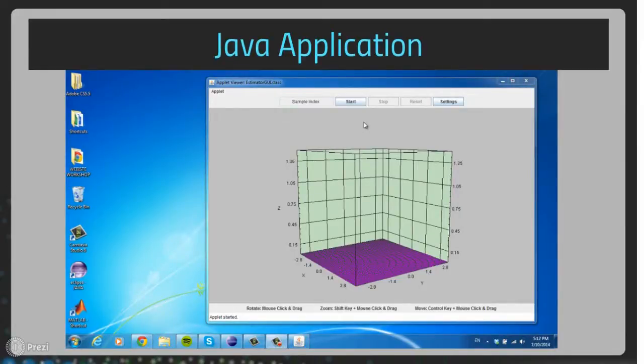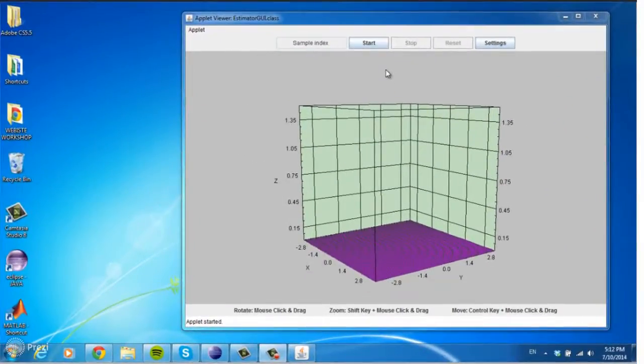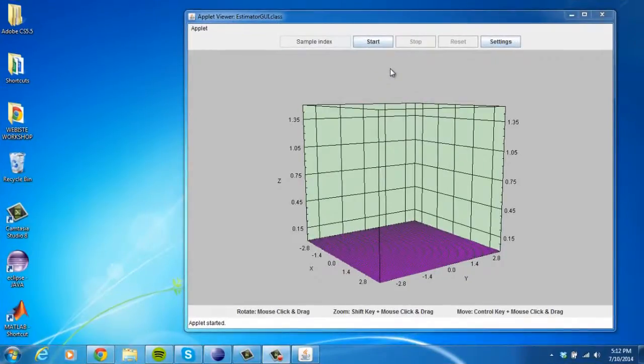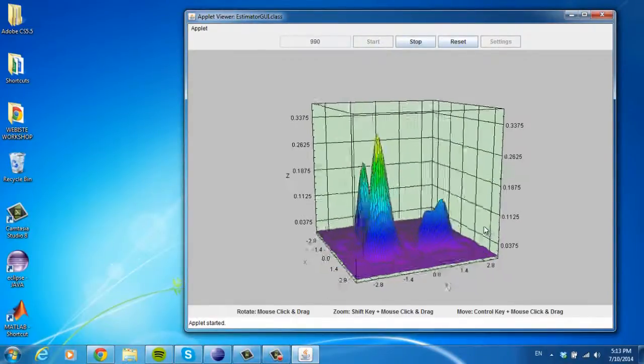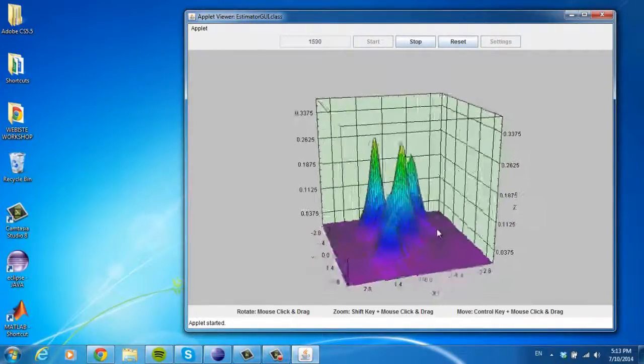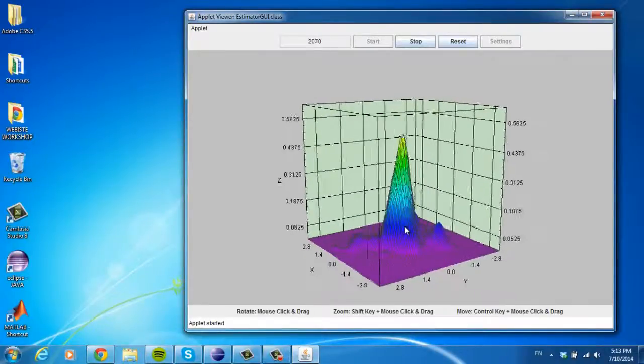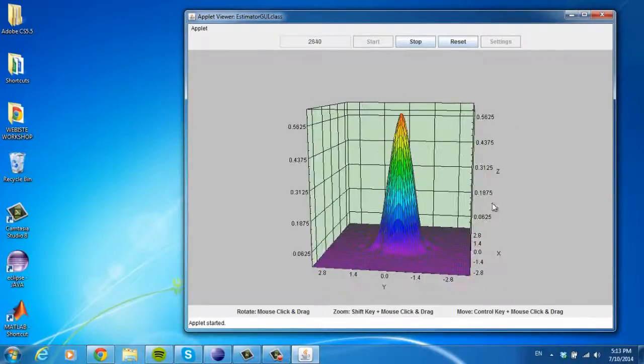But how can laypeople take advantage of its utility? With an easy-to-use application. And here we have the Java two-dimensional density estimator. We see the tool displaying the probability for a three Gaussian mixture model. After 1,000 data points, we switch to a unimodal generating function and the estimate adapts to the new data coming in.